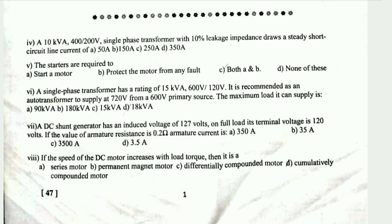Question 7/8: If the speed of a DC motor increases with load torque, this is only possible for a differentially compound motor, as the speed-torque characteristic allows speed to increase with increasing load torque in that configuration.